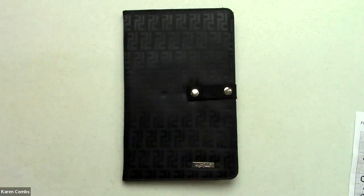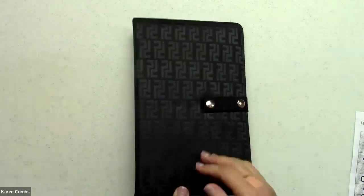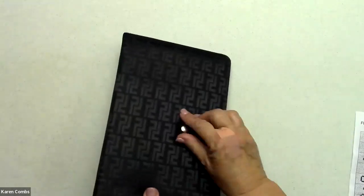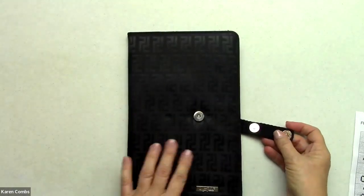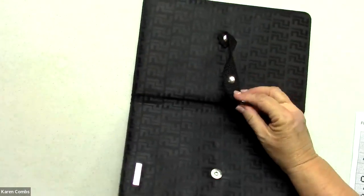It is by Knit Picks and it's a chart minder, something to hold your chart and keep track of it. This is vinyl so it wipes right off. This opens up and it's a magnet that just closes. What's nice about it is now you can turn this around, attach it, and now it will stand up.